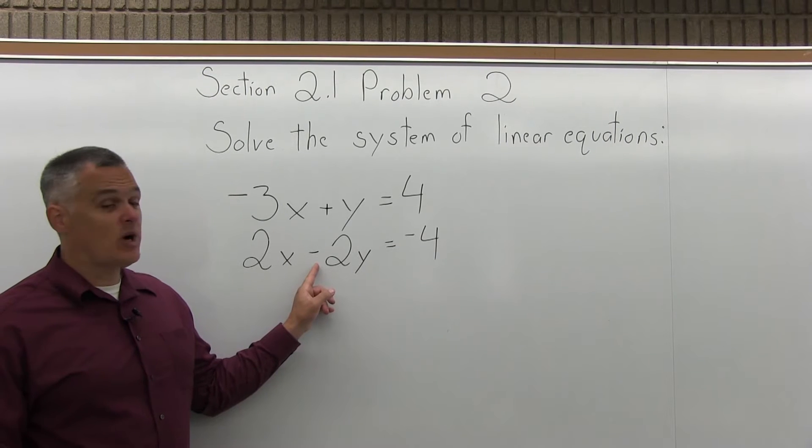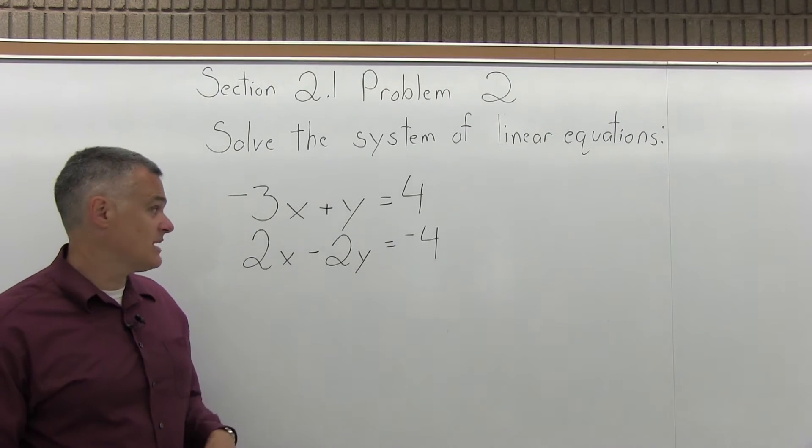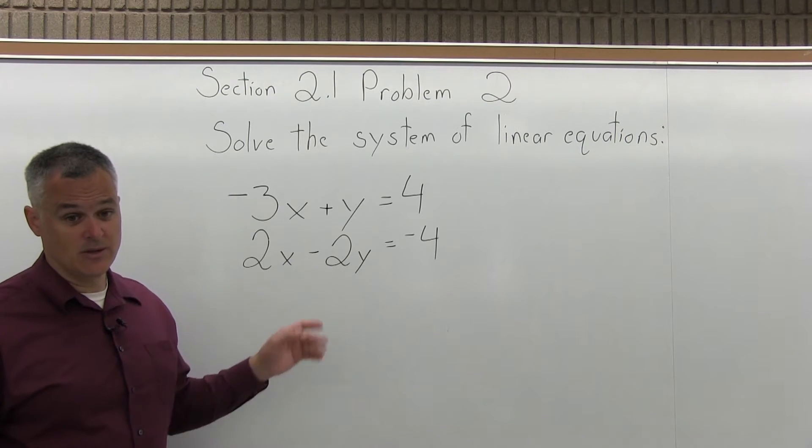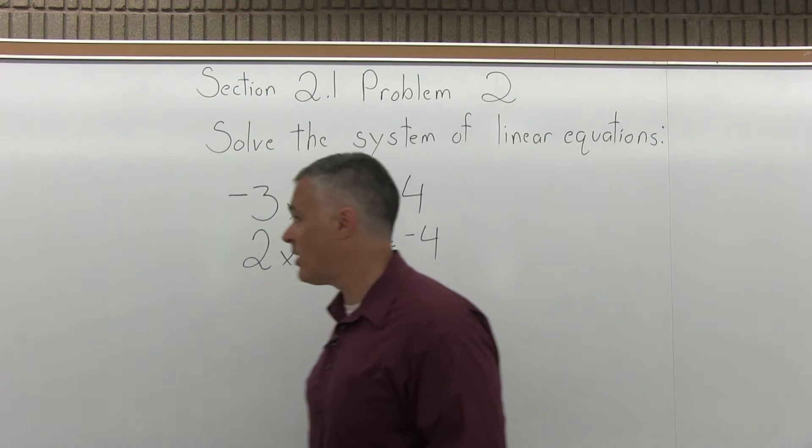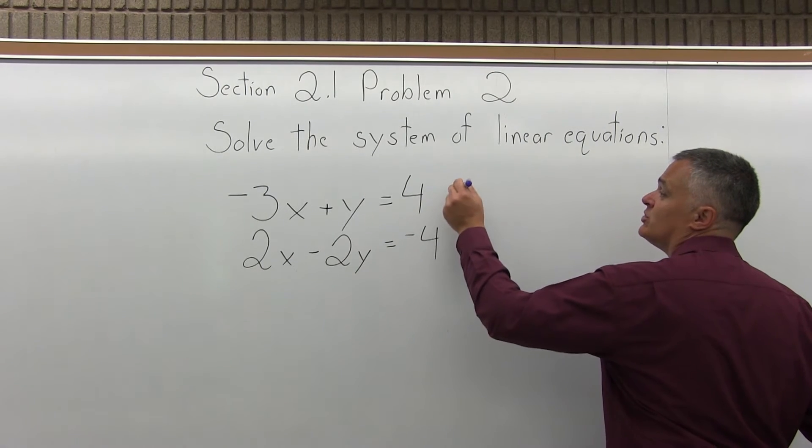Or for the y's, positive 2y and negative 2y, that would also work. Either way you'll get the same answer, I feel that the y is a little bit easier to cancel. So for step one, I'm going to multiply the top equation times 2.